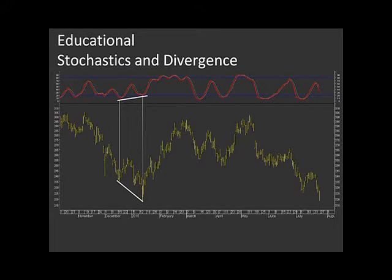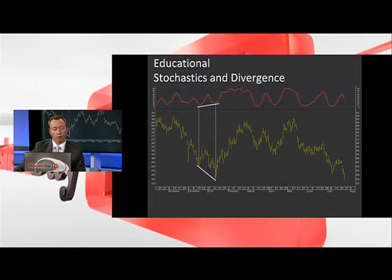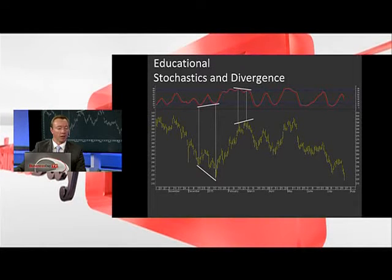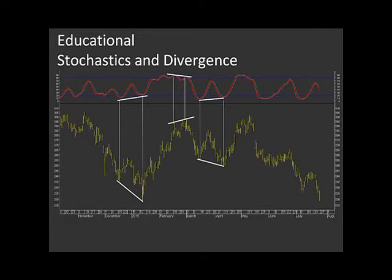That example shows what we call positive divergence — where the price action made a lower low yet the stochastic made a higher low. Notice that straight after that the share price changed direction, going from a downtrend into an uptrend. Then a little while later we had negative divergence, where the stochastic makes a lower high whilst the price makes a higher high, and again it preempted a change in direction — the share price headed lower straight after that.